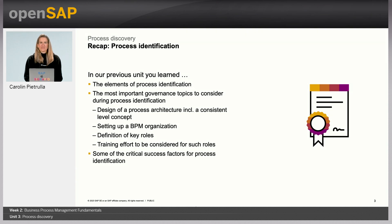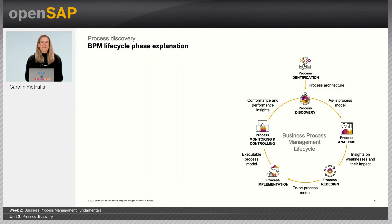Now it's time to kick off Unit 3, Process Discovery. After creating a process architecture, it's time to fill it with life. During process identification, processes have been determined on a high level. But what are the activities and process steps carried out within the operational processes? Who's responsible for carrying them out? And which systems are they supported by? These are the questions we can find answers for in well-designed process models.